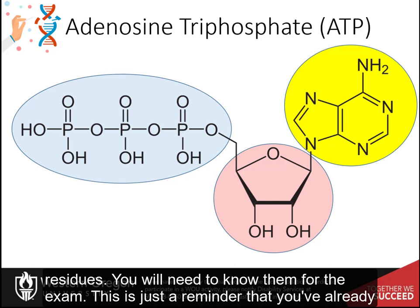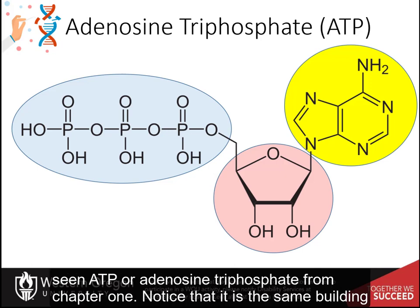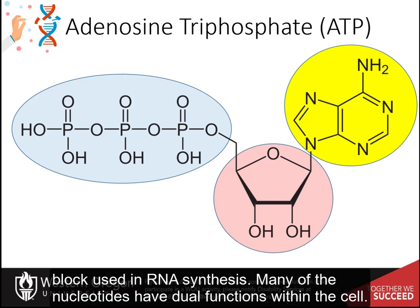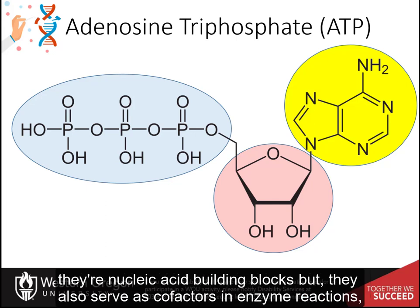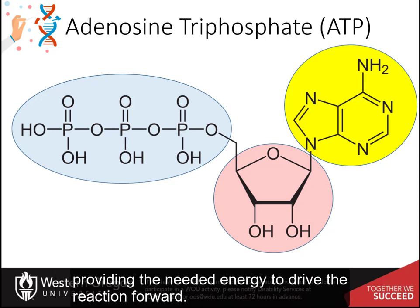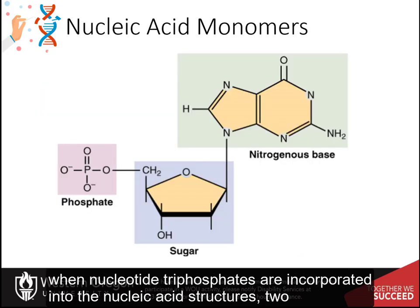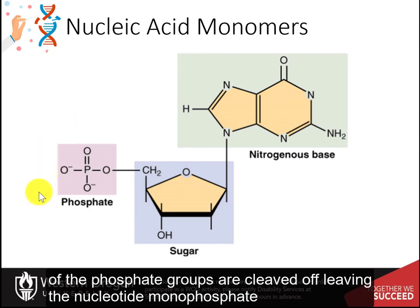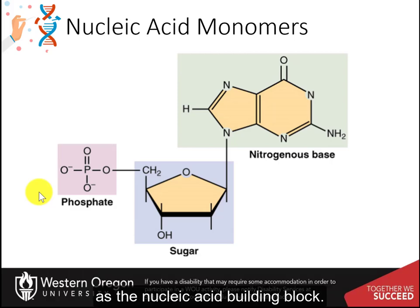This is a reminder that you've already seen ATP, or adenosine triphosphate, from Chapter 1. Notice that it is the same building block used in RNA synthesis. Many nucleotides have dual functions within the cell: they are nucleic acid building blocks, but also serve as cofactors in enzyme reactions, providing the needed energy to drive the reaction forward. When nucleotide triphosphates are incorporated into nucleic acid structures, two of the phosphate groups are cleaved off, leaving the nucleotide monophosphate as the building block.